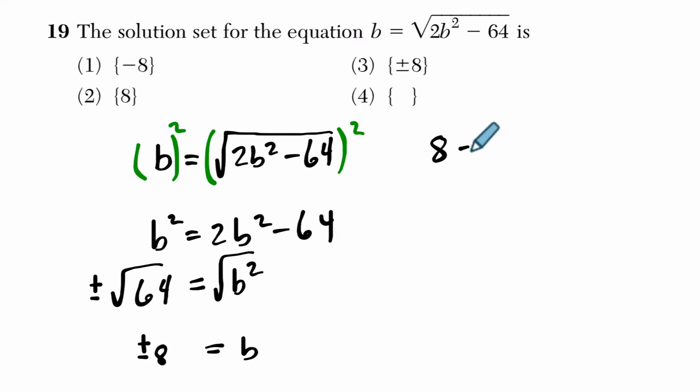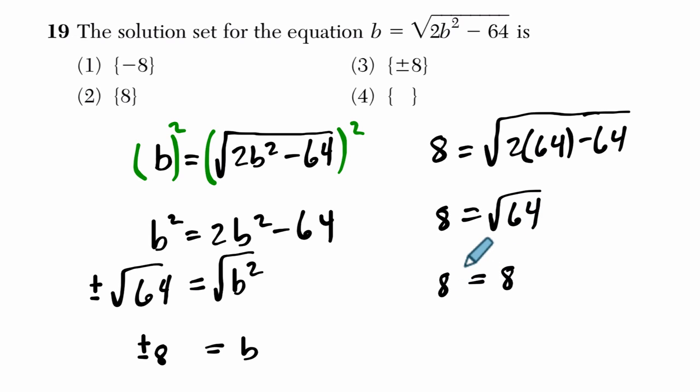So if b is 8, 8 should equal the square root of 2 times b squared, which is 64, minus 64. And that's just 8 equals the square root of 64. We assume the positive square root here. So that works.